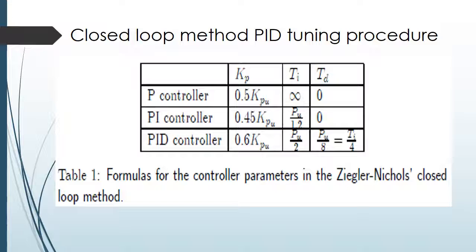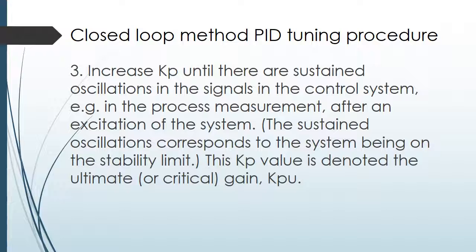For the PID controller: TD is PU over 8, which equals TI over 4. That completes Table 1 with the formulas for the controller parameters in the Ziegler-Nichols closed-loop method. For step three of the tuning procedure: increase KP until there are sustained oscillations in the signal in the control system — for example, in the process measurement after an excitation of the system. The sustained oscillation corresponds to the system being on the stability limit. This KP value is denoted the ultimate or critical gain, with symbol KPU.